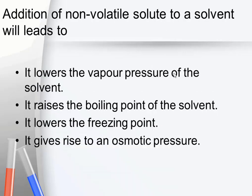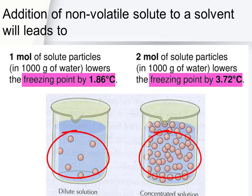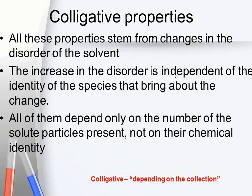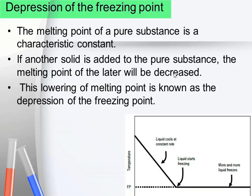These properties which depend on the number of solute particles — properties which are altered by the number, not by the nature — are called colligative properties. Colligative means depending on the collection of solute molecules. In this experiment we are going to study one of the colligative properties, that is depression in freezing point.